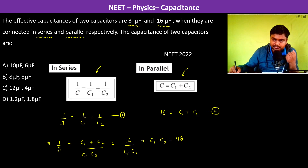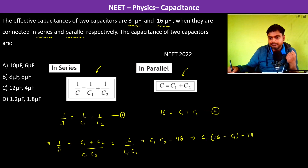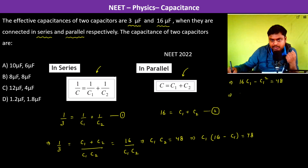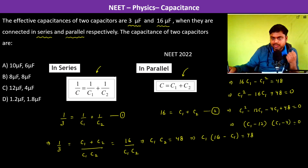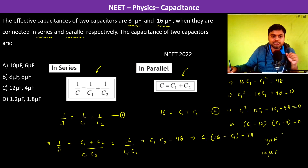Substituting, we get 16·c1 − c1² = 48, which rearranges to c1² − 16·c1 + 48 = 0. Factoring: c1² − 12·c1 − 4·c1 + 48 = 0, giving (c1 − 12)(c1 − 4) = 0. Therefore both capacitors are 4 microfarads and 12 microfarads respectively. The answer is c: 4 microfarads and 12 microfarads.